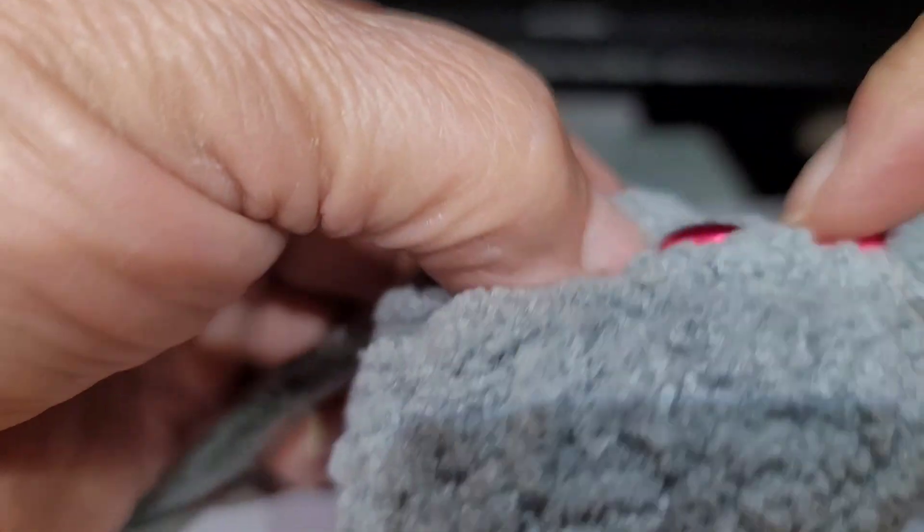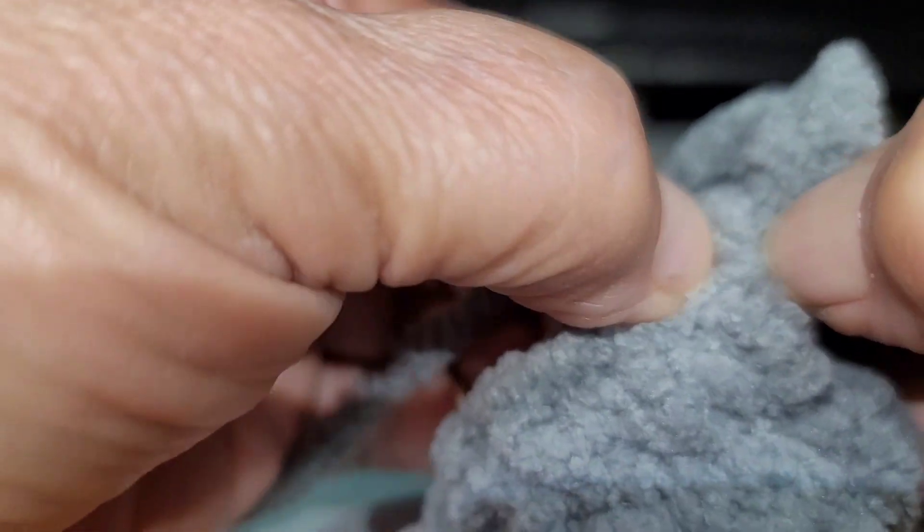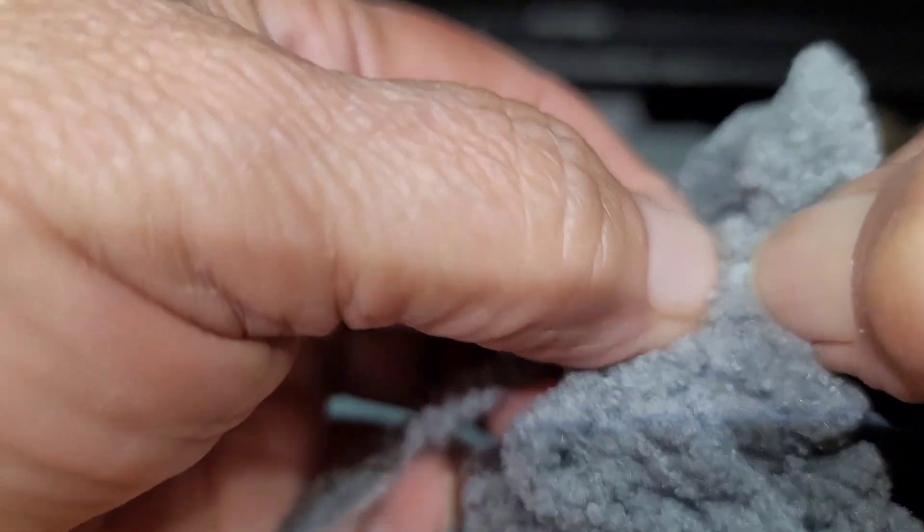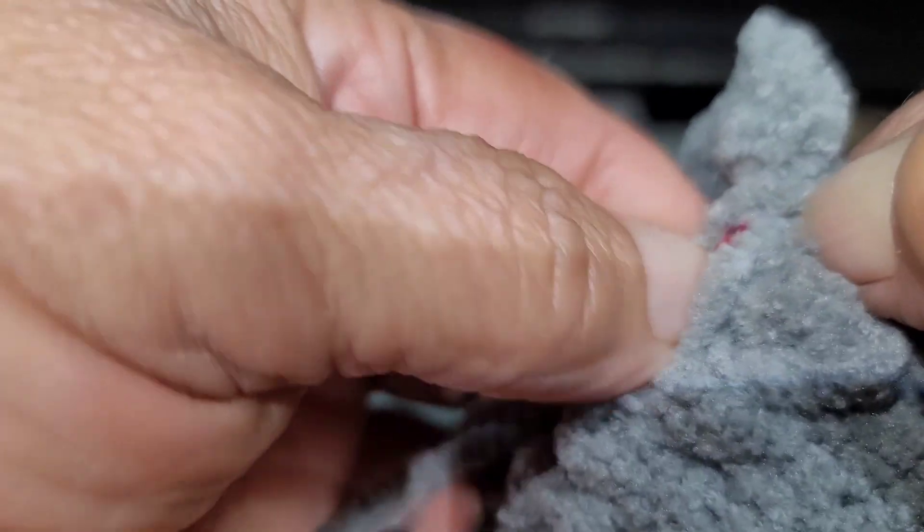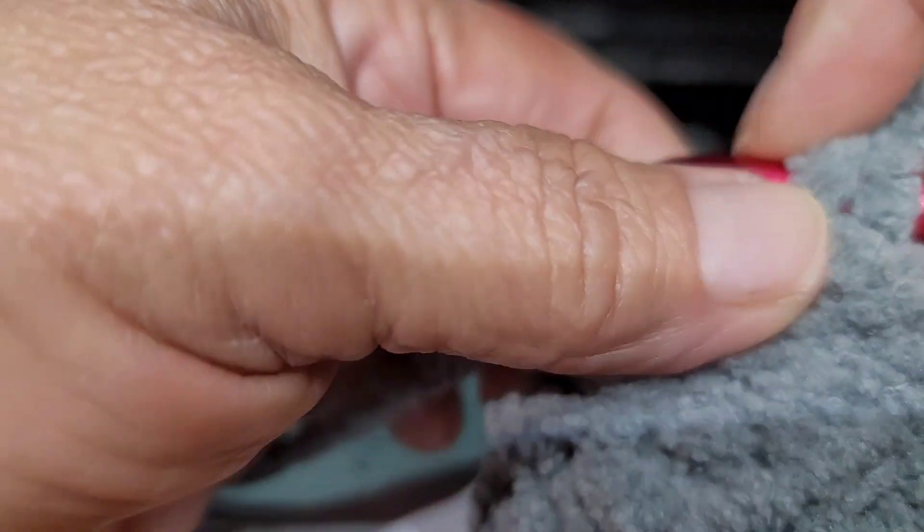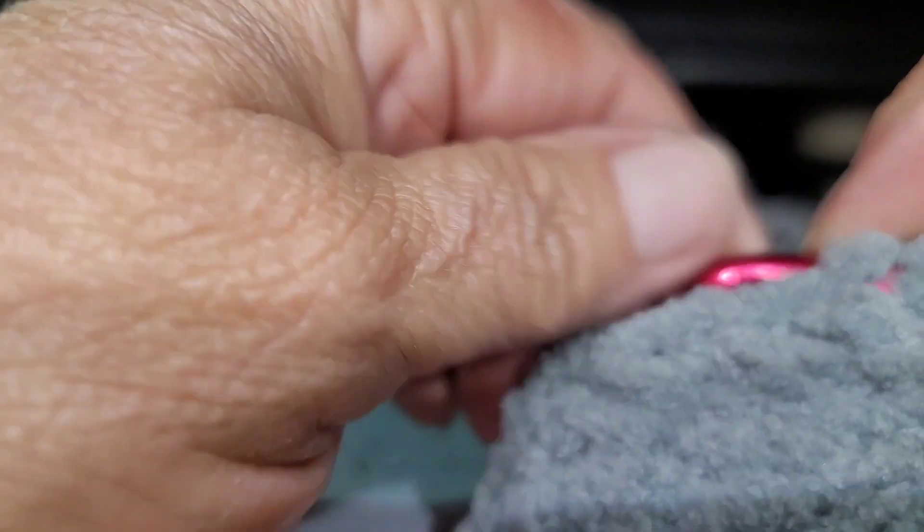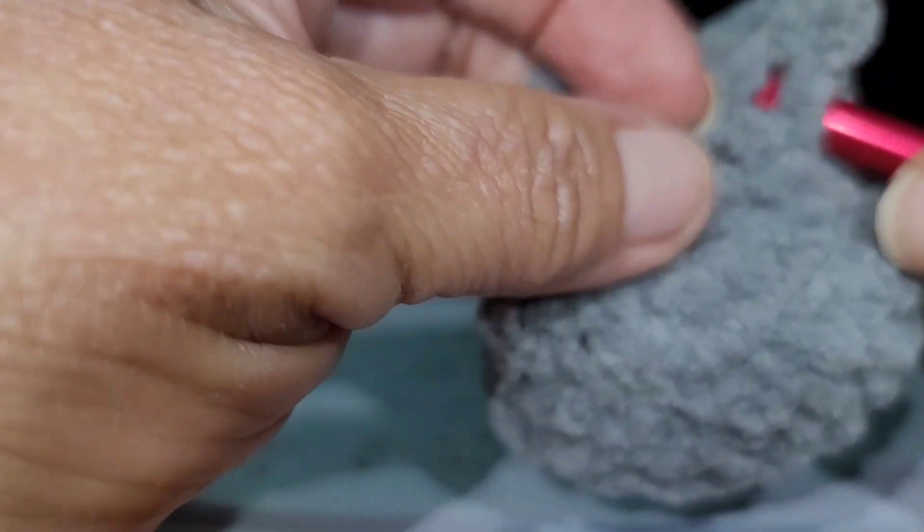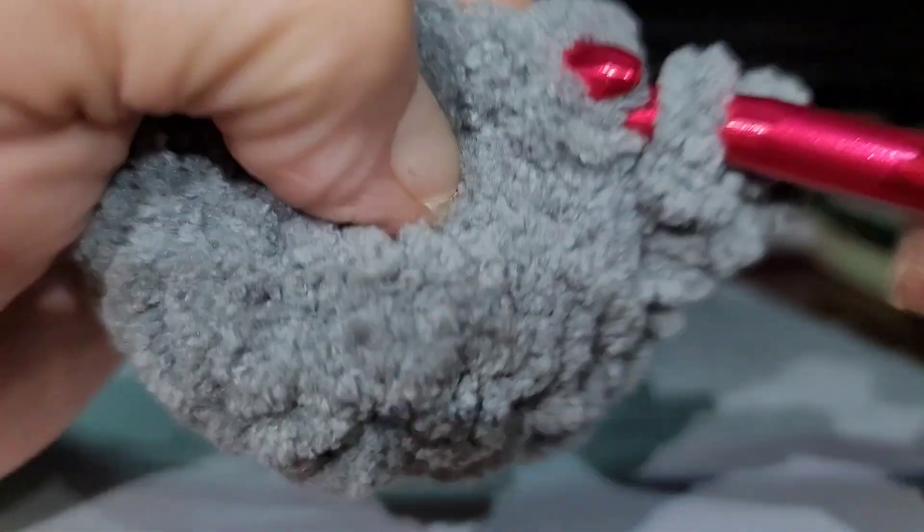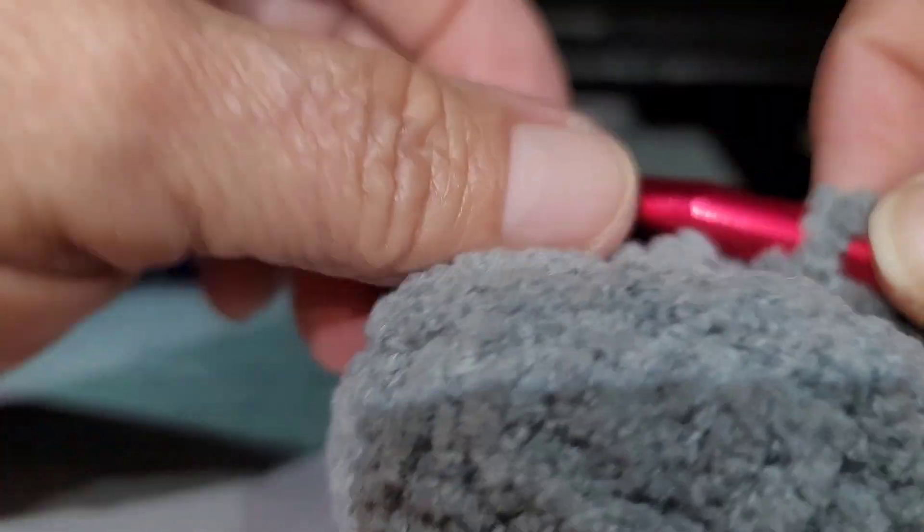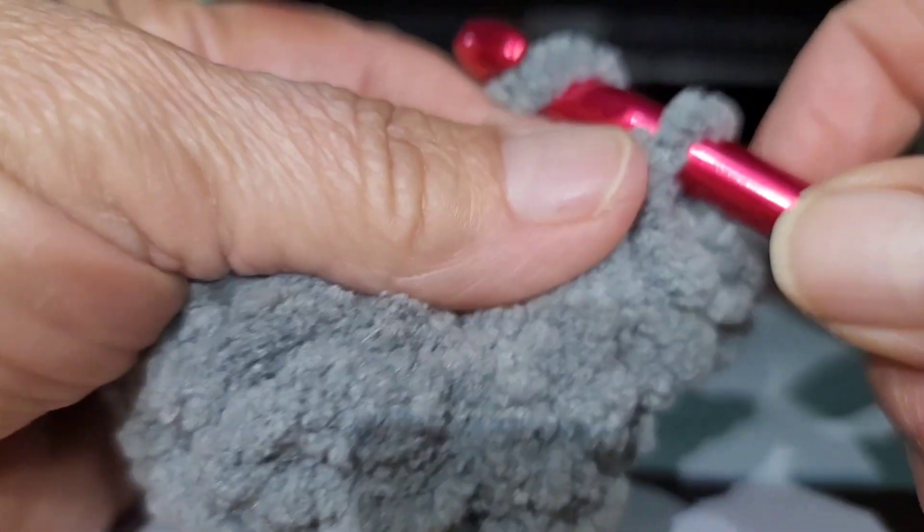She says use the front loop. That's the loop closest to you. Slip stitch in the front loop right next to the tentacle you just did. Chain two, one, two.